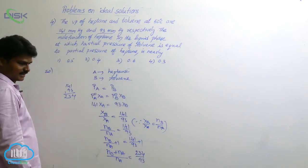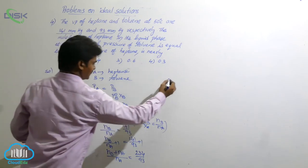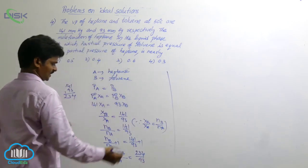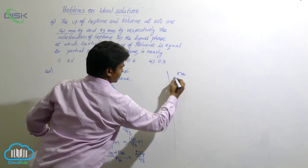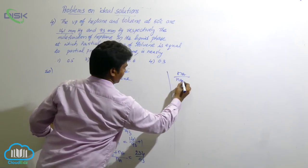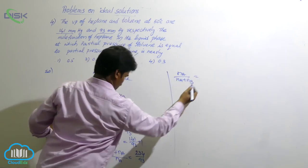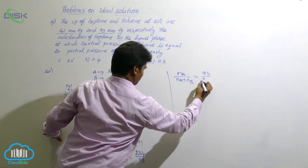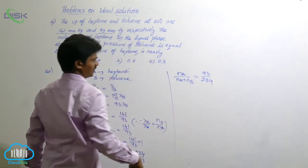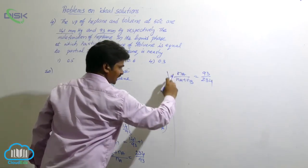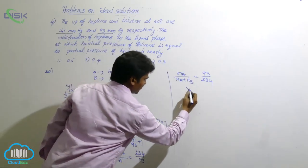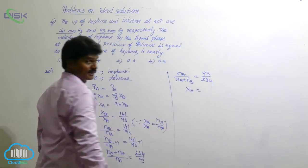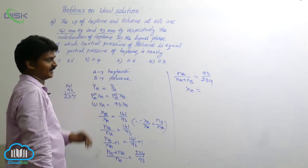So, let us make the reciprocals. We can write this expression as NA by NA plus NB equals to 93 by 234. 93 by 234. It is nothing but mole fraction of A.